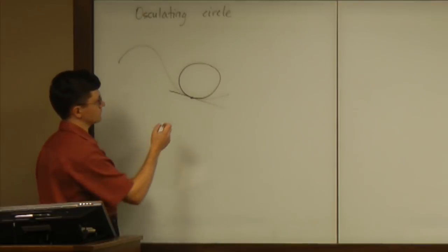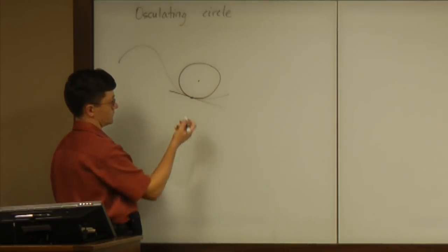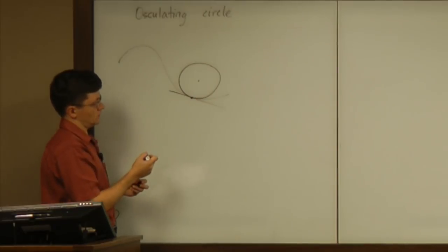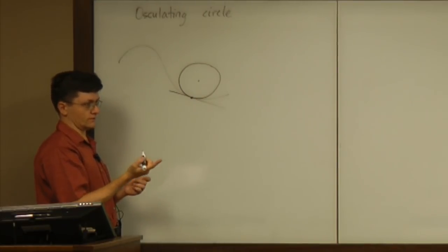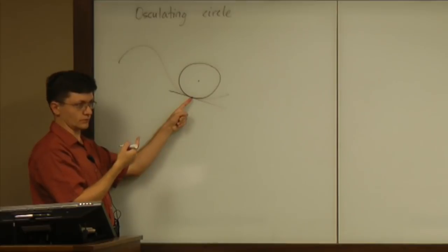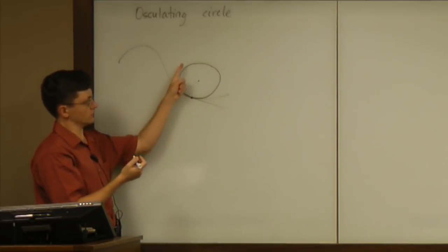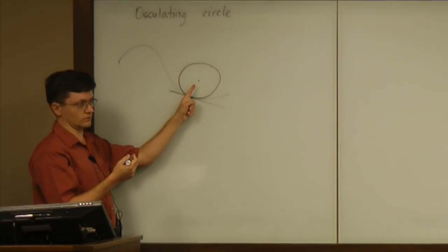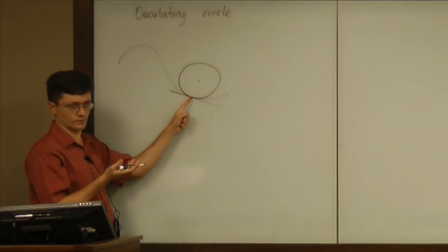And the way you define what it is, is the circle having three properties. First, it passes through that point. Second, the tangent line to that circle at this point is exactly the same as tangent to the curve. And third, the curvature of the circle is exactly the same as curvature of the curve.